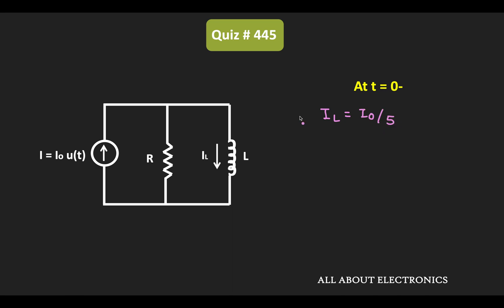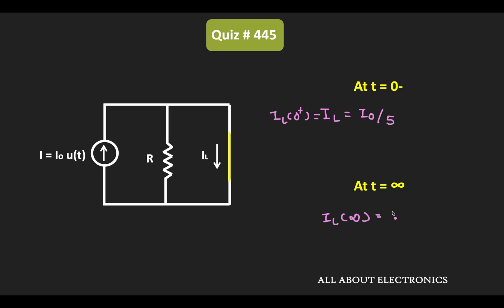At t equal to 0 plus, the same current will flow through the inductor, so we can say that IL(0+) is also equal to I0 divided by 5. Now let us find the current through the inductor at t equal to infinity. In the steady state condition, the inductor will act as a short circuit and therefore this entire current will flow through the inductor. So we can say that at t equal to infinity, IL(∞) is equal to I0. In this way we got the initial as well as the final current.